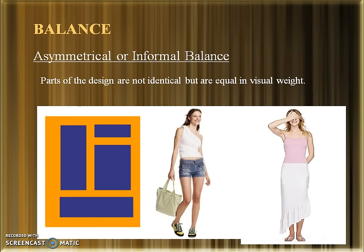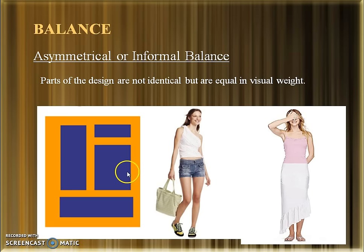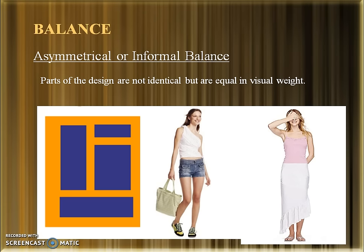The second is Asymmetrical or Informal Balance, where parts of a design are not identical to each other but they are equal in visual weight. In the first figure, consider a central axis going from top to bottom or left to right — you will not see identical elements across the central axis. In the first dress, it is an asymmetrical shoulder dress and an asymmetrical skirt. Even though they are asymmetrical, visually the weight is balanced.